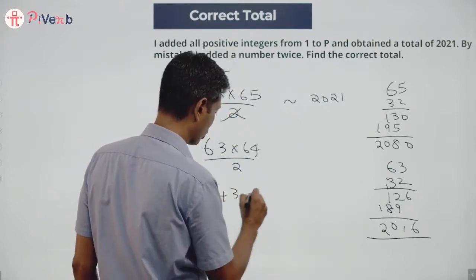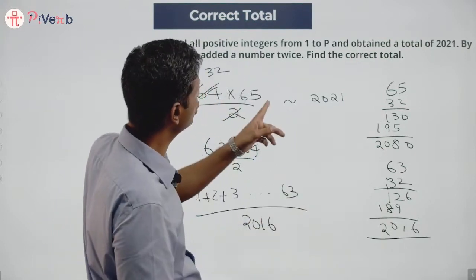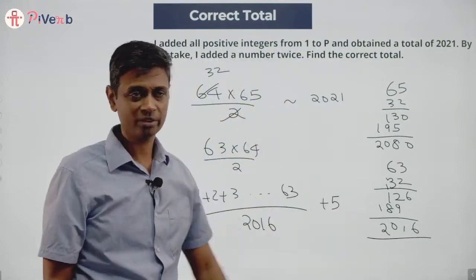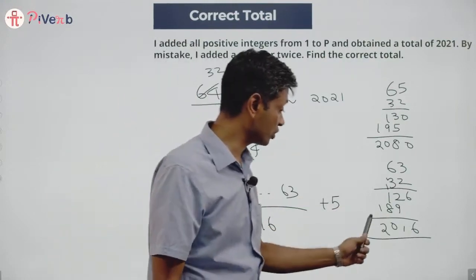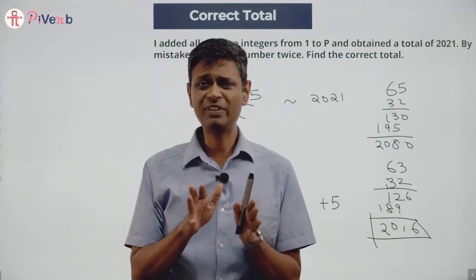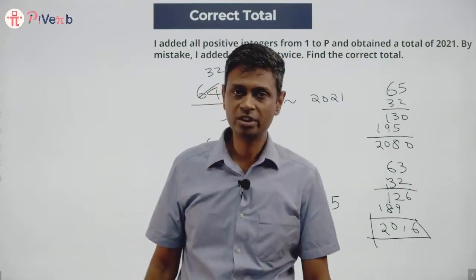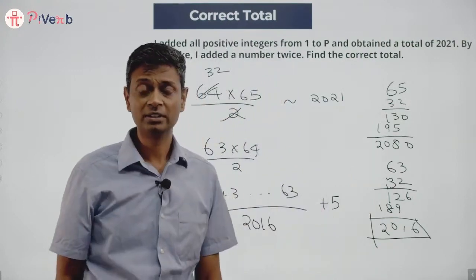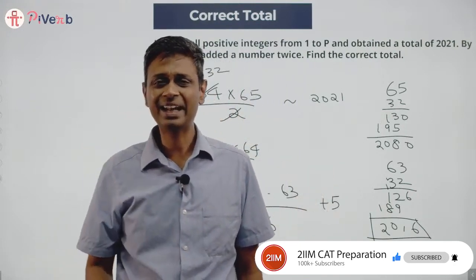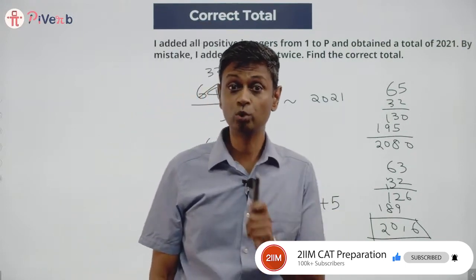So I add 1 plus 2 plus 3 all the way till 63. This total is 2016. I have found out 2021, or I have added 5 an additional time twice. Find the correct total. The correct total is 2016. Effectively we are saying something of the form p into p plus 1 by 2 is very close to 2021 but slightly lesser. Try out different values, find the closest one. 63 into 64 by 2 is 2016. That works because it is just 5 short of 2021. So if I wrote down all numbers from 1 to 63 and then add one more 5 to it because I have written down 5 twice, I'll get 2021. The correct answer is 2016.